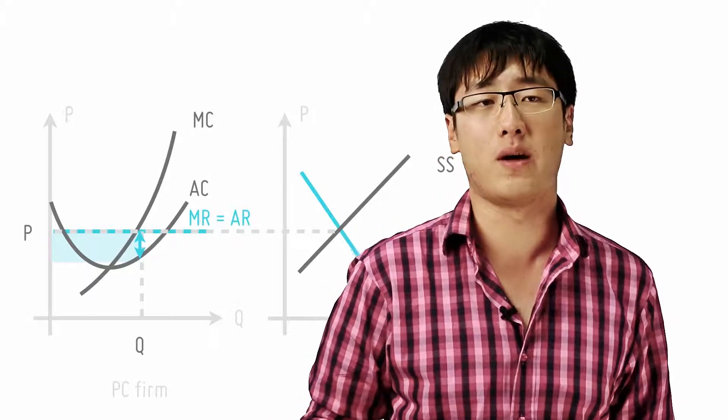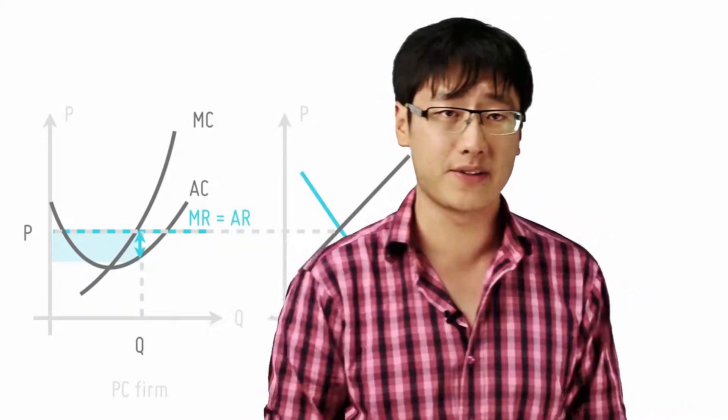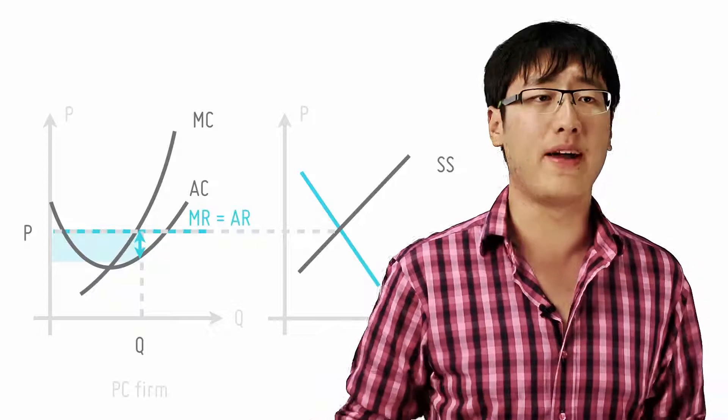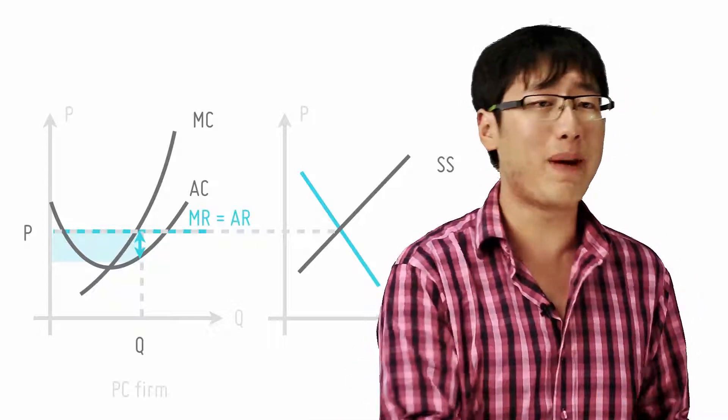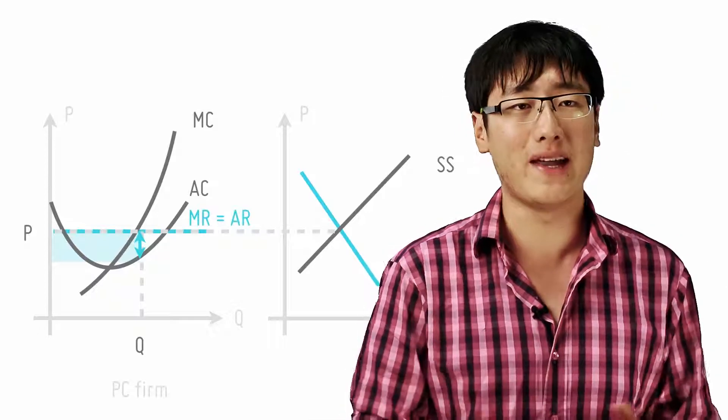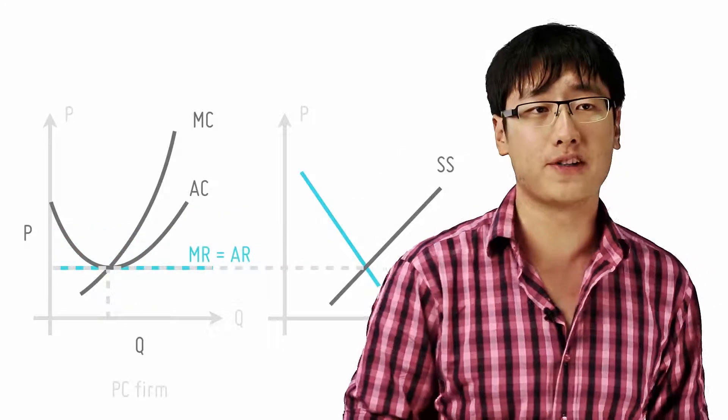So how do monopolies continue being monopolies and keep earning supernormal profits? Well remember in the case of a perfectly competitive firm, if an external party sees supernormal profits, it will enter the industry and reduce the supernormal profits.